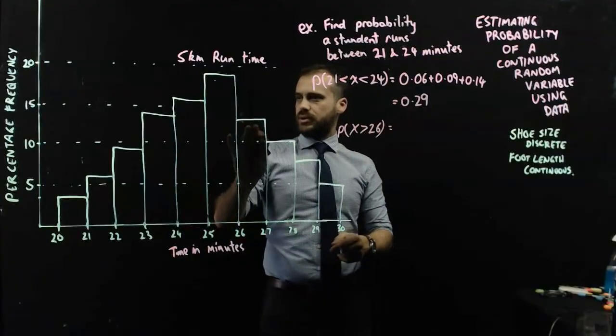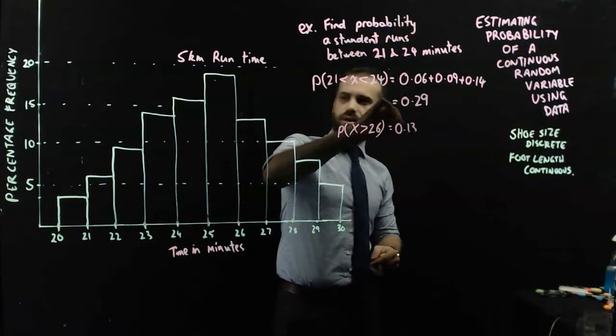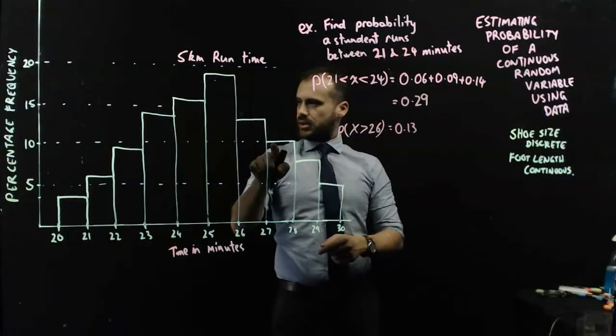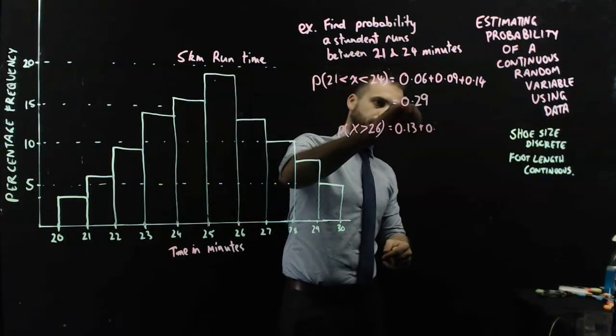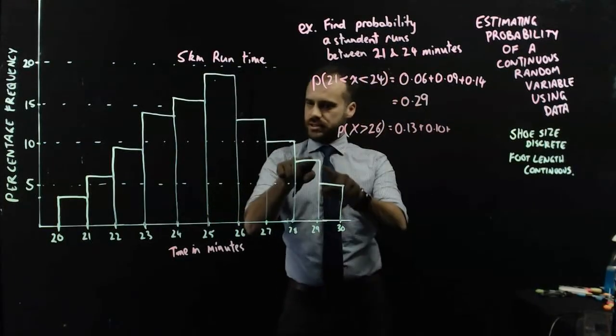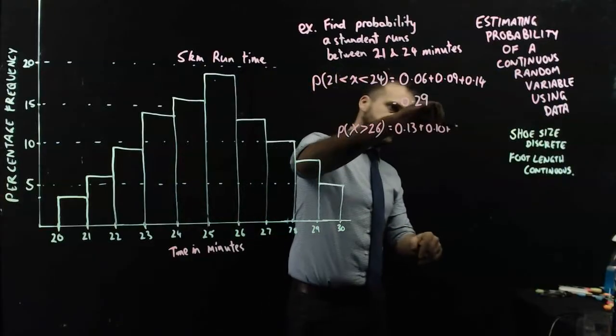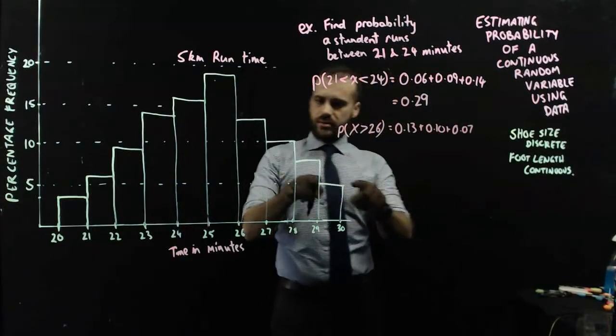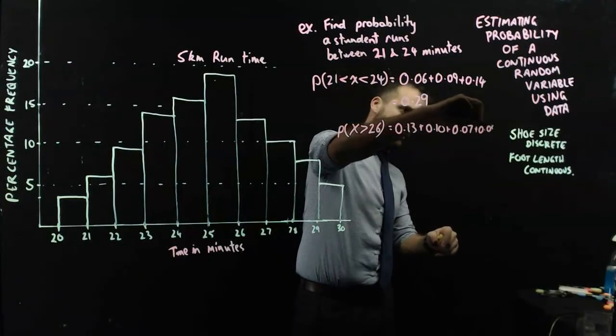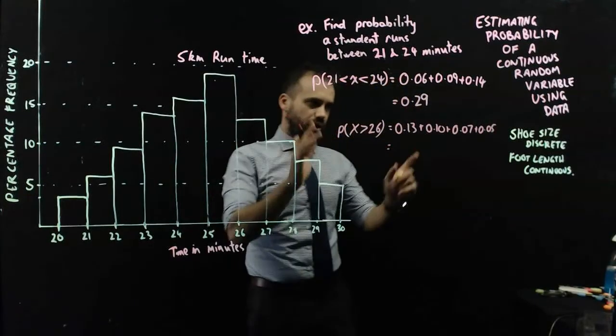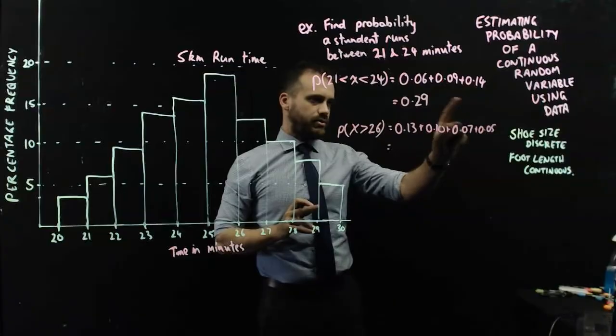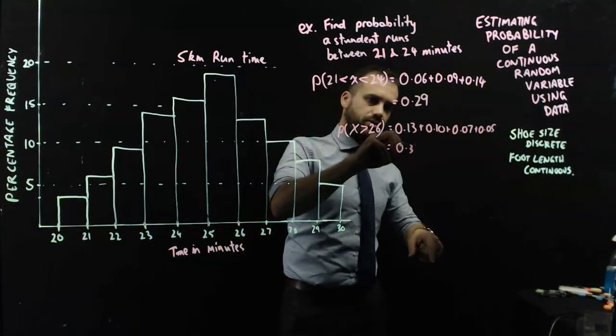I just need to add up those numbers. It looks like 0.13 plus 0.10 plus 0.07 plus 0.05. I add up those numbers and I get 23, 30, 0.35.